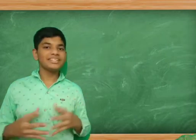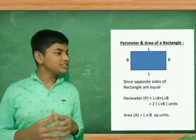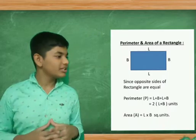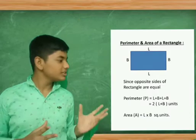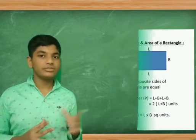Now perimeter and area of rectangle. Since opposite sides of rectangle are equal, perimeter of rectangle is twice the sum of length and breadth. And area of the rectangle is length into breadth square units.